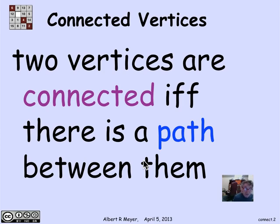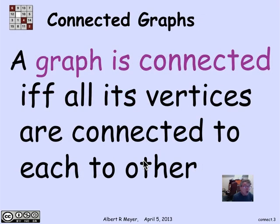That's equivalent to saying if and only if there's a walk between them. We include length 0 paths and length 0 walks, so every vertex is considered to be connected to itself. A whole graph is said to be connected if all of its vertices are connected to each other.